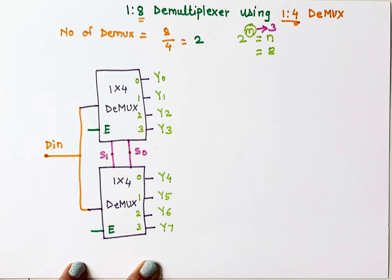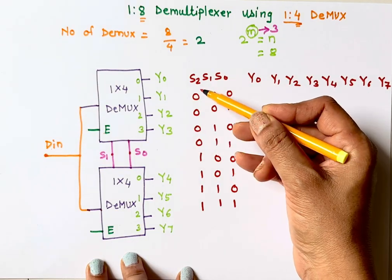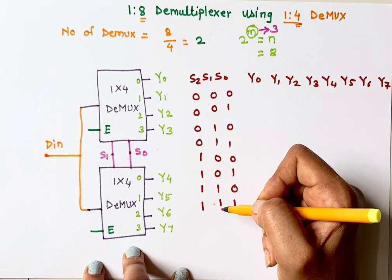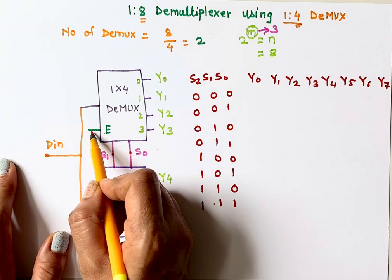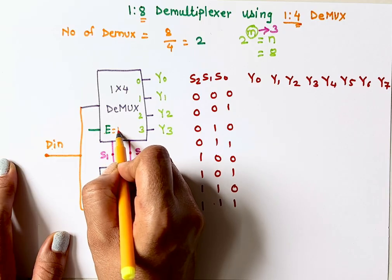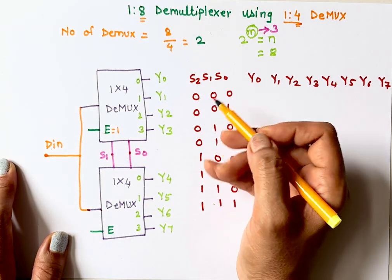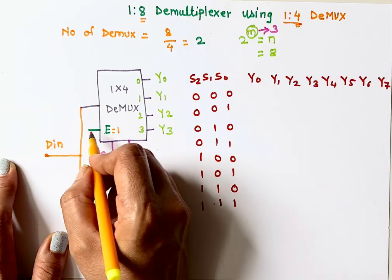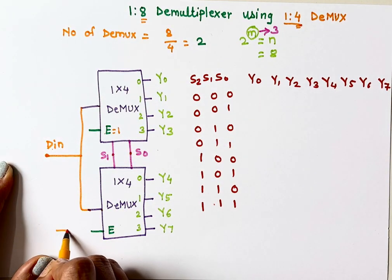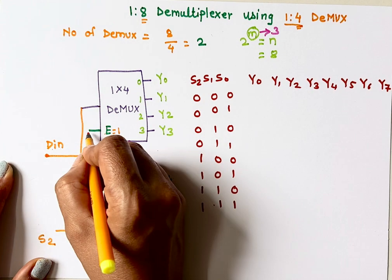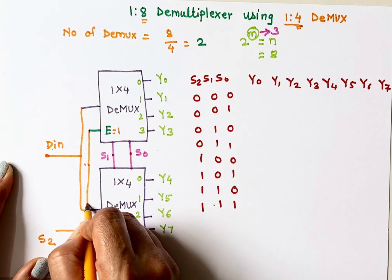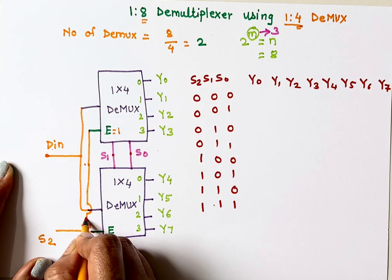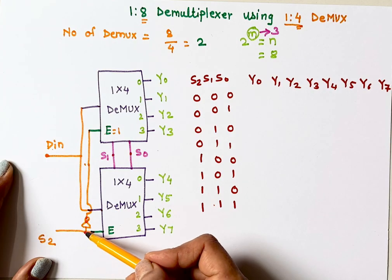Now let me write the truth table and explain how to connect S2 to the enables. For the first 4 conditions, S2 is 0, and for the next 4 conditions, S2 is 1. Since the enable is active high, the demultiplexer turns on when enable receives 1. For the first 4 conditions, I want the first demultiplexer selected, so I will put an inverter on S2 going to the first IC's enable, and connect S2 directly to the second IC's enable.